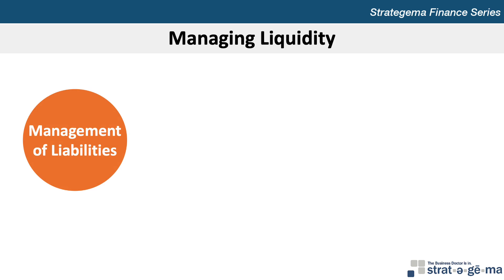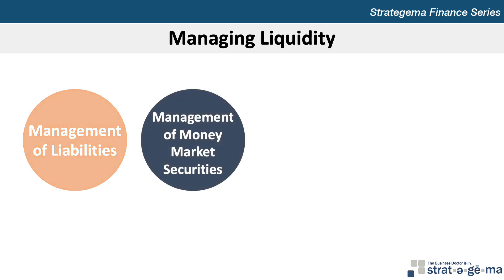If a bank needs funds for just a few days, an increase in short-term liabilities from the federal funds market may be appropriate. However, if the bank needs funds over a longer period, it may consider implementing a policy geared towards increasing deposits or selling liquid assets. Because some assets are more marketable than others, the bank's asset composition can affect its degree of liquidity. Banks should maintain a level of liquid assets, such as money market securities, that will satisfy their liquidity needs but use the remaining assets to earn a higher return.